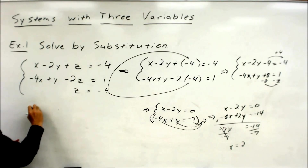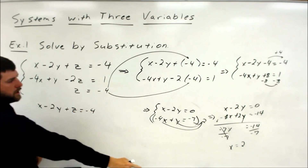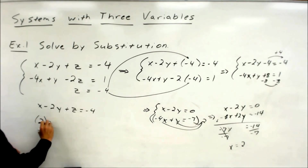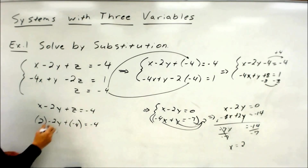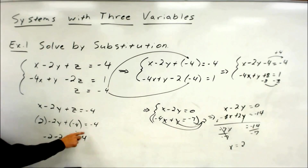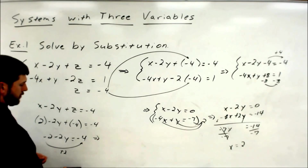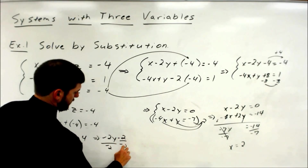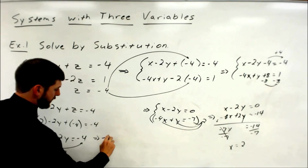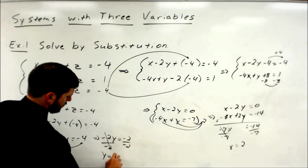I'll use the first one: x minus 2y plus z equals negative 4. Well, we said x was 2, and z they told us at the beginning was negative 4. Do your arithmetic: 2 minus 4 is negative 2. Move the negative 2 over — so we add 2. We get negative 2y equals negative 2. Divide by the coefficient, and we get y equals 1.